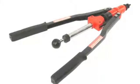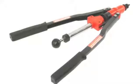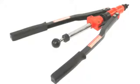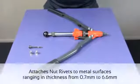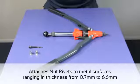The HNO2 is specifically designed to attach both right and left hand threaded blind nut rivets or nutserts onto most metal surfaces ranging in thickness from 0.7 millimetres to 6.6 millimetres.